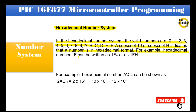For example, hexadecimal number 1F can be written as 1F base 16 or as 1FH. For example, hexadecimal number 2AC base 16 can be shown as: 2AC base 16 = (2 × 16²) + (A = 10 in hex, so 10 × 16¹) + (C = 12 in hex, so 12 × 16⁰).